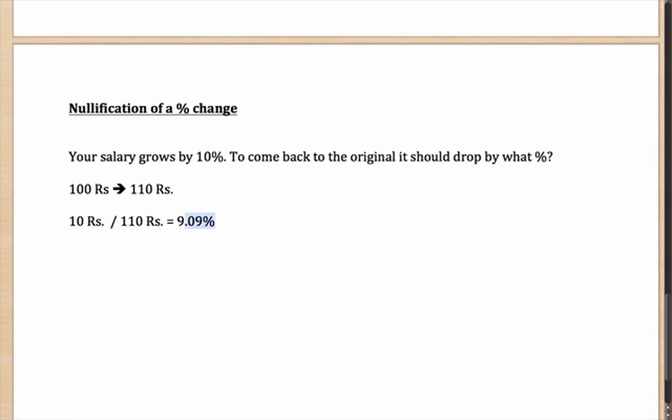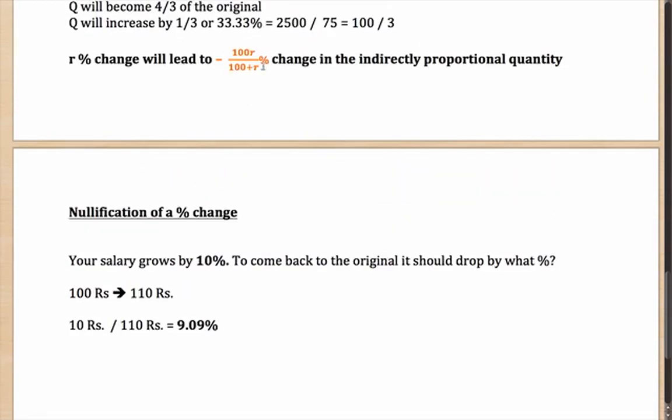As you can see, this is different from the 10% change. To calculate this, you can do it by this method, calculate the actual values, or once again you can use the formula that you used above, minus 100R/(100 plus R) percent. Which means that if you have to nullify an R percent change, you can do it by minus 100R upon 100 plus R percentage change.